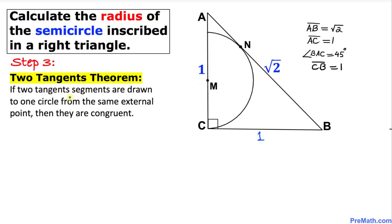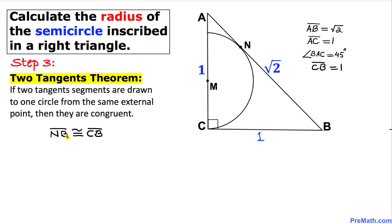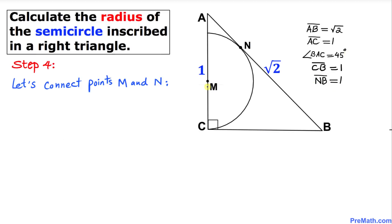Let's look at the two tangents theorem: if two tangent segments are drawn to one circle from an external point — in our case, point B — then they are congruent, meaning the same in shape and size. Therefore, line segment NB is congruent to line segment CB. Since CB is 1, line segment NB is also 1.